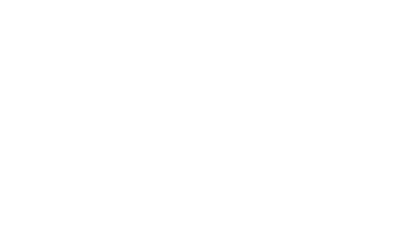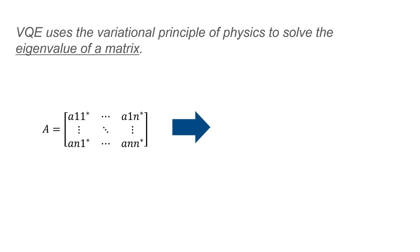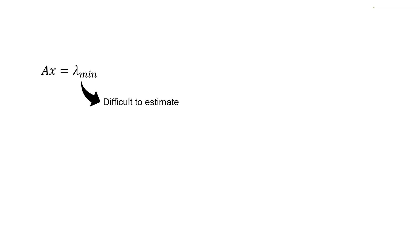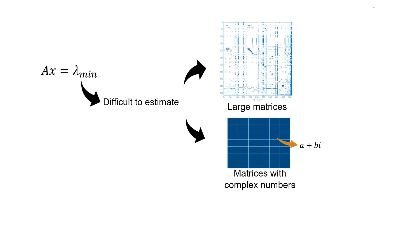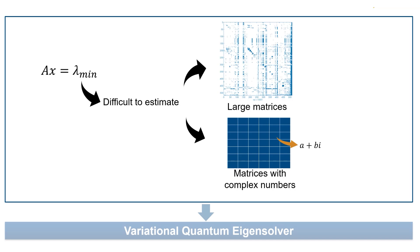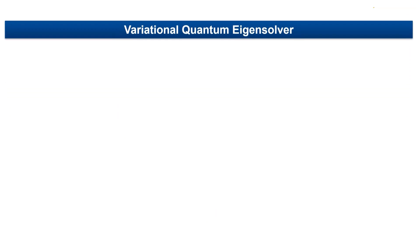As the name suggests, VQE uses the variational principles of physics to solve the eigenvalues of a matrix. Using classical computing methods to find the smallest eigenvalue is difficult, especially when the matrix is big and consists of complex numbers. This is where the Variational Quantum Eigensolver comes into play.